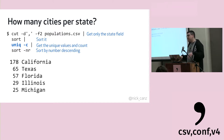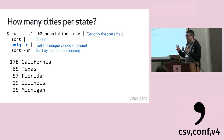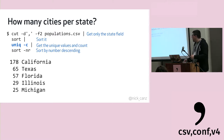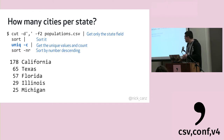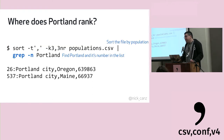An important thing to note is that 'uniq' expects sorted input, so think of 'sort' and 'uniq' as a pair — otherwise you won't get the output you want. In this file we can see 178 cities in California, 65 in Texas, 25 in Michigan — which was not what I was expecting.